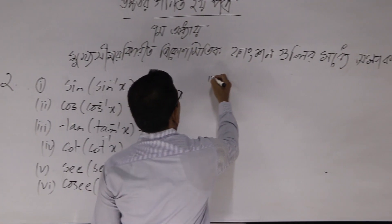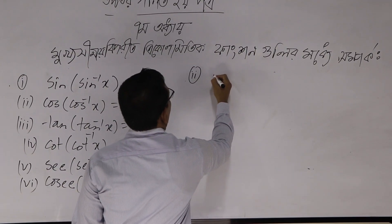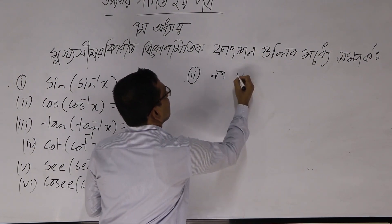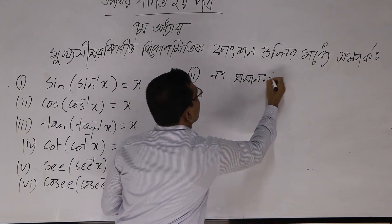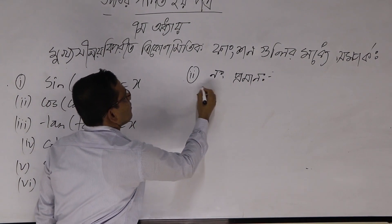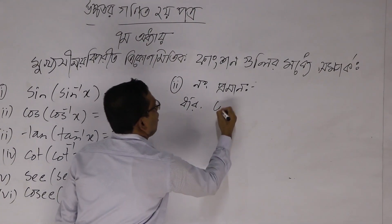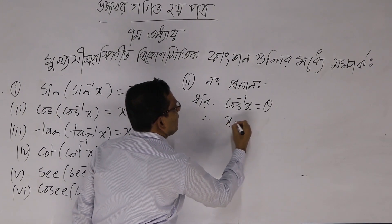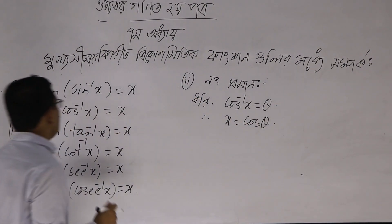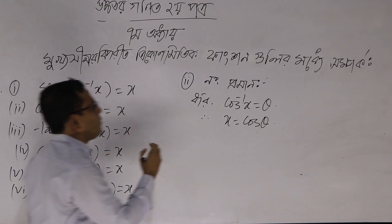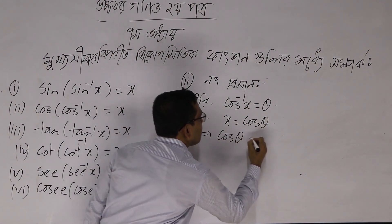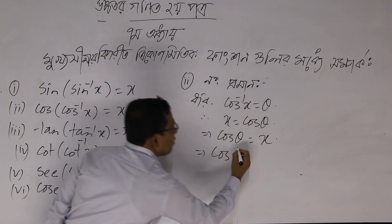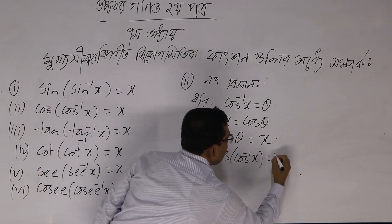We will prove this by a short method. Let cos inverse x equal theta. Then we can write x equals cos theta. So cos theta equals x. Therefore we can write cos inverse x equals theta, which gives us the same value x.